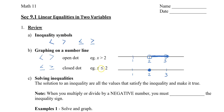This time it says x is less than 2, so less than means it is smaller. I'm going to draw an arrow that points to the left to show all the numbers that are less than 2.